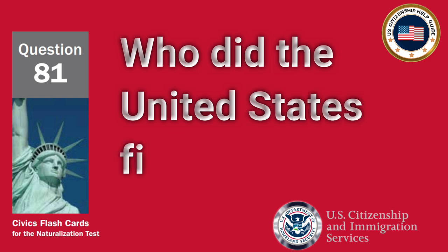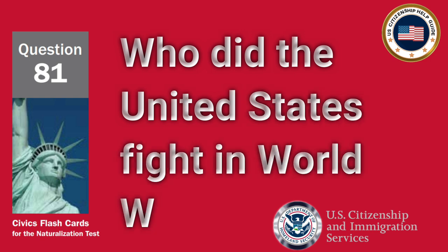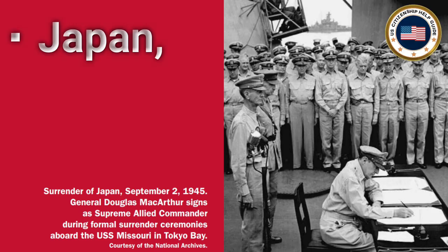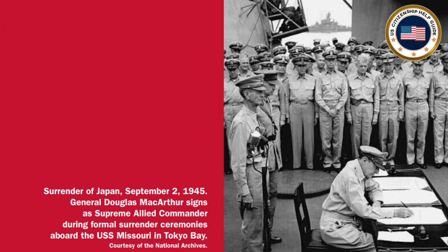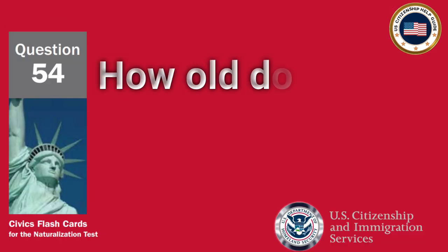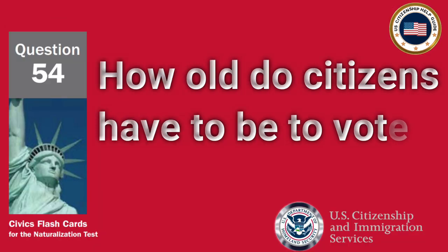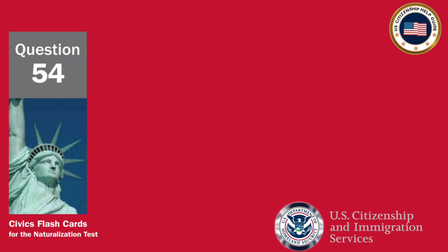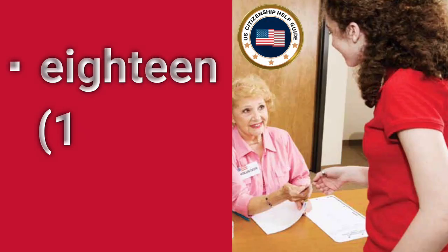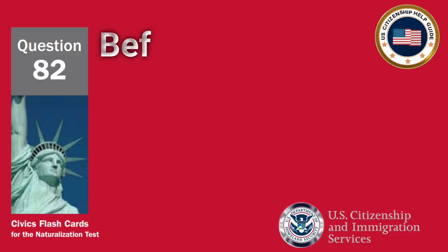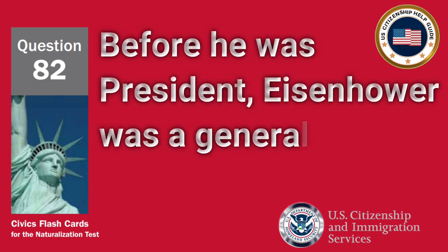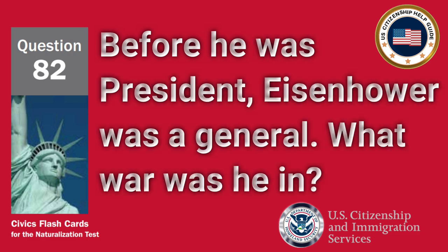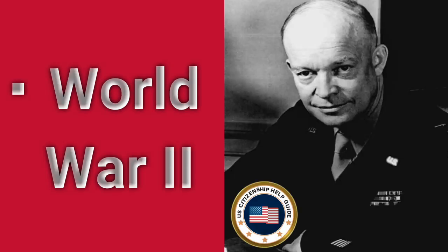Who did the United States fight in World War II? Japan, Germany, and Italy. How old do citizens have to be to vote for president? 18 and older. Before he was president, Eisenhower was a general. What war was he in? World War II.